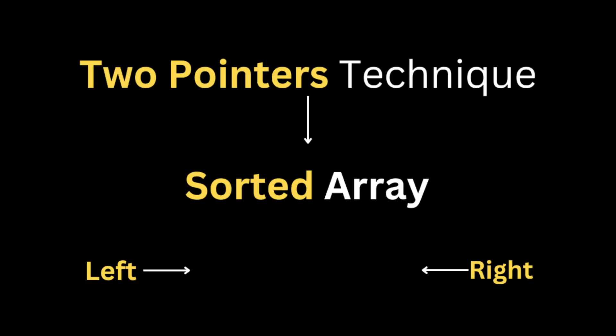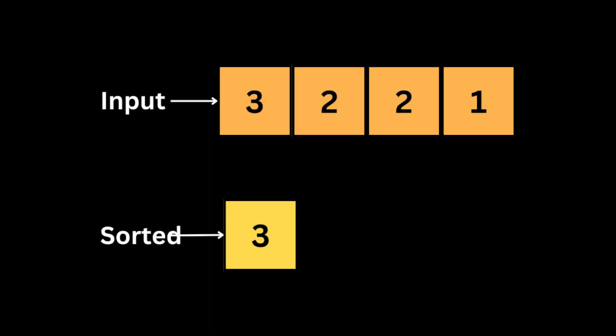To solve this problem we're going to use the two-pointers technique. But before that we need to sort the array, because the two-pointers technique requires the array to be sorted. Let's take an example with this input array and a limit of three to see how the two-pointer approach works.